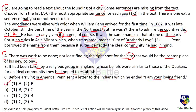Only one option has A as the first blank, which confirms our answer. For blank 2, the name of the city — the early Christian city meaning 'city of brotherly love' — is being discussed. Statement B says 'it had been taken by a religious group in England,' where 'it' again refers to the name of the city. It must be introduced immediately after 'city of brotherly love,' and 'whose beliefs were similar to those of the Quakers for an ideal community' connects perfectly to Penn wanting to develop an ideal community. So statement B fills blank 2, and the answer is option A.